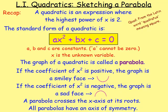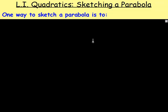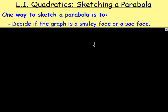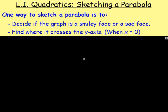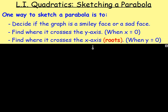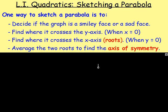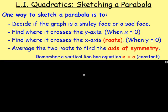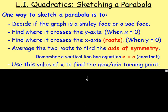To sketch a quadratic, or a parabola, there are different ways to do this. One is to use the completed square form, and another is this method here. First, decide if the graph is a smiley face or a sad face by looking at the coefficient of x squared — positive means smiley, negative means sad. Find where it crosses the y-axis (when x is zero) and the x-axis (when y is zero). These crossing points are the roots. Averaging the two x-values gives the axis of symmetry, and you can then use that x-value to find the maximum or minimum turning point.